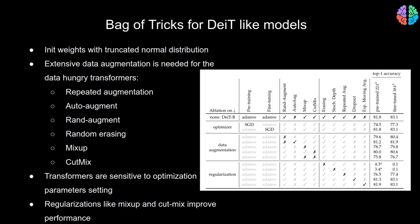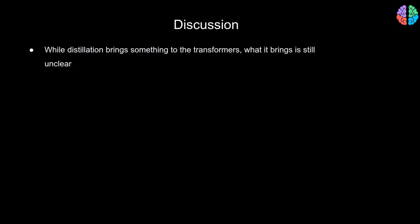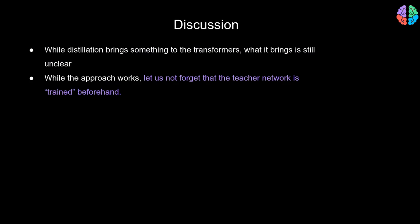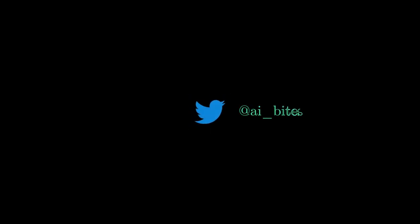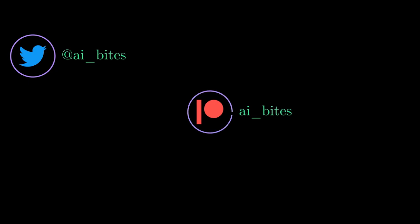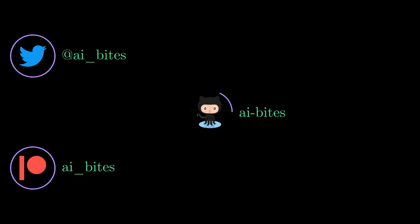To summarize, these augmentation and regularization tricks were experimented with in the paper, and the ablation studies table presents results for each. While the paper shows that distillation tokens bring something meaningful, we are yet to fully understand what exactly contributes to the better performance — clearly it's something quite different from the class tokens. Also, the teacher network here is already trained on ImageNet, so we still need to wait for a standalone transformer architecture trained independently without depending on any other networks. Thank you so much for watching.